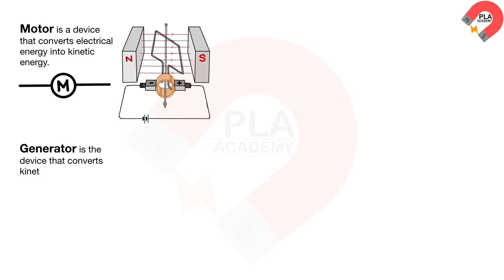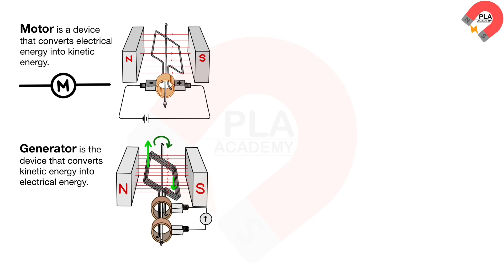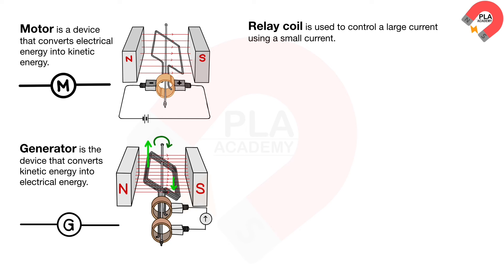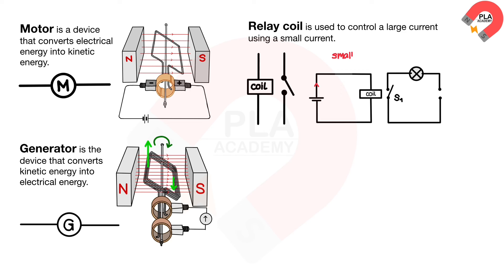A generator is a device that converts kinetic energy into electrical energy. This is the symbol of a generator, with more detail in section 4.5.2 AC generator. A relay coil is used to control a large current using a small current. This is the symbol of a relay coil. In the circuit diagram, a small current flows from the lower battery, causing the relay coil to magnetize and close switch S1. This allows a large current to flow from the larger power supply, causing the light bulb to turn on. More detail on the relay coil is in section 4.5.3.